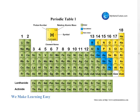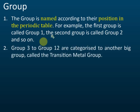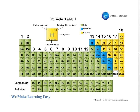Groups 3 to 12 are categorized into a larger group called the transition metals, because all these elements share similar chemical properties.